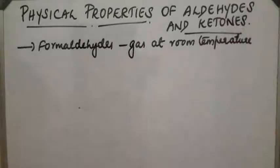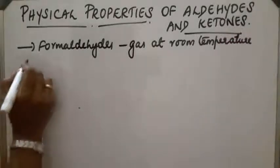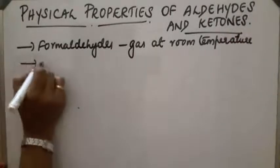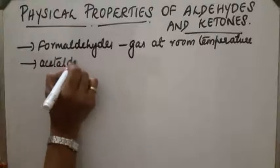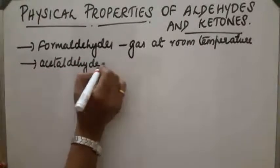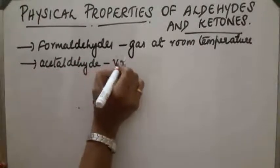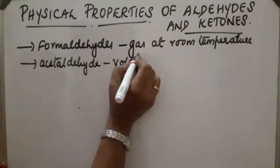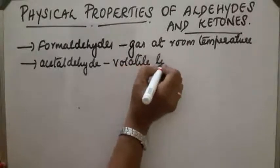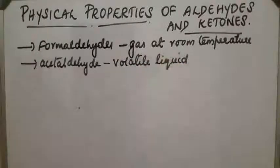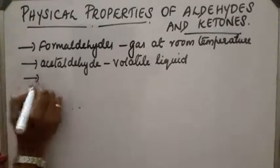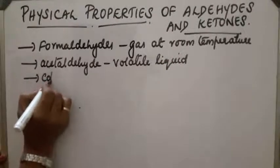Acetaldehyde is a volatile liquid. Other lower members of aldehydes and ketones are colourless liquids.